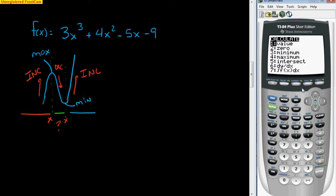So we'll go second, calc, choose maximum number four. Now you can use your arrow keys because you need to find a left bound and a right bound. You're telling your calculator what x values are we looking in between. Well, just to be safe, I'm going to look between negative 2 and 0. So I'm actually going to type that in. So I'm going to go negative 2. And then what's the right bound? I'll say 0. They ask you to guess. You really don't need to guess. So you just hit enter again.